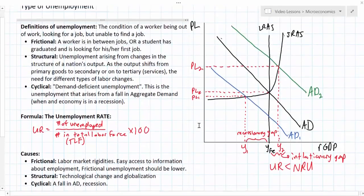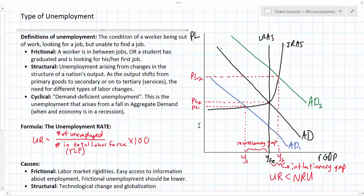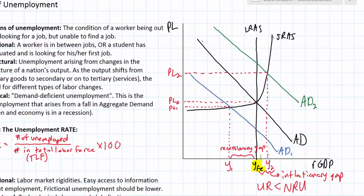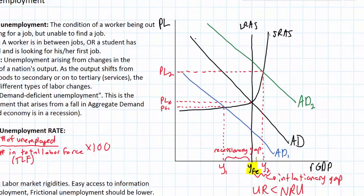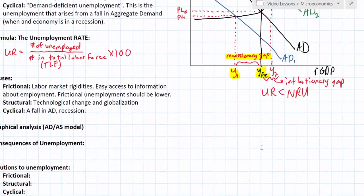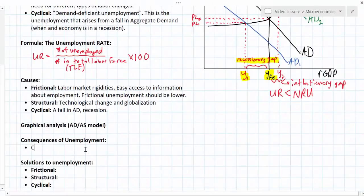Looking back at a graph, we can see that when an economy is producing at its full employment level of YFE, the economy is experiencing its natural rate of unemployment, which includes structural and frictional unemployment. If an economy experiences a recession and aggregate demand falls, causing output to fall, unemployment rises and a nation experiences cyclical unemployment. The most desirable unemployment rate is therefore the natural rate, and if there is any cyclical unemployment, the economy is considered unhealthy, experiencing a recession or contraction in its business cycle.